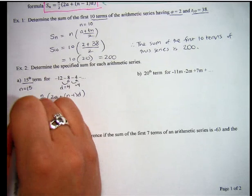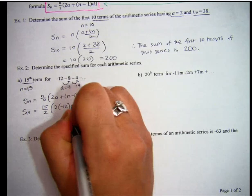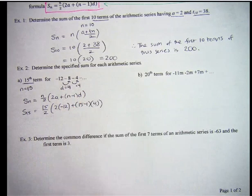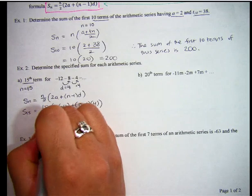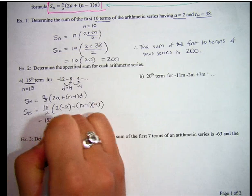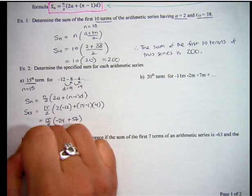I'm going to plug in 15 for N, plug in negative 12 for A, and plug in 4 for D. Alright, so just simplify, and you should end up getting 240 for the sum of the first 15 terms.